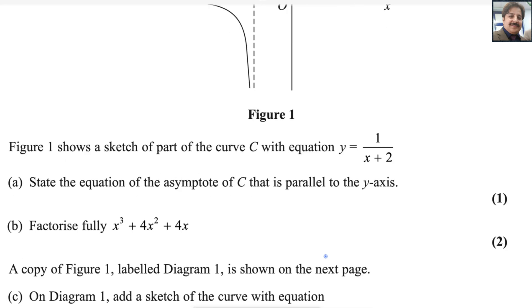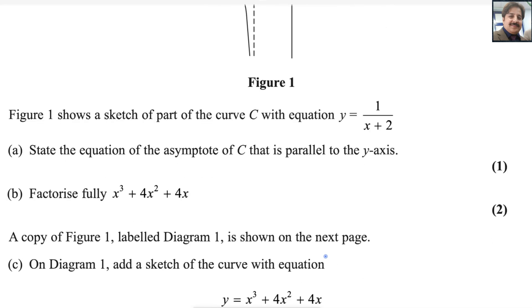Read the statement of this question. Figure 1 shows a sketch of part of the curve C with equation y equals 1 over (x + 2). First part: state the equation of the asymptote of C that is parallel to the y-axis.